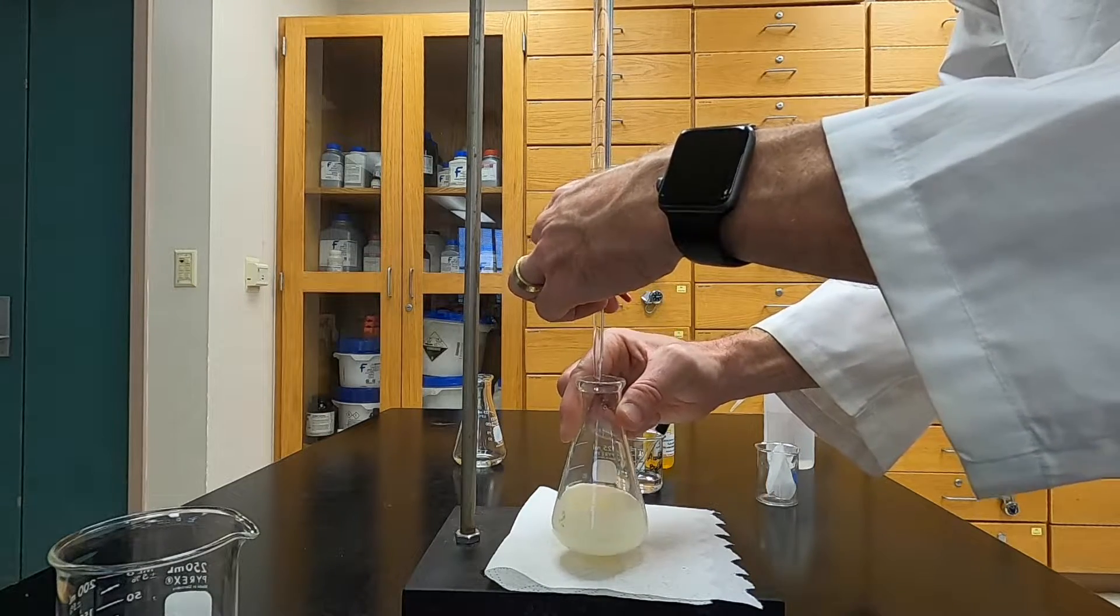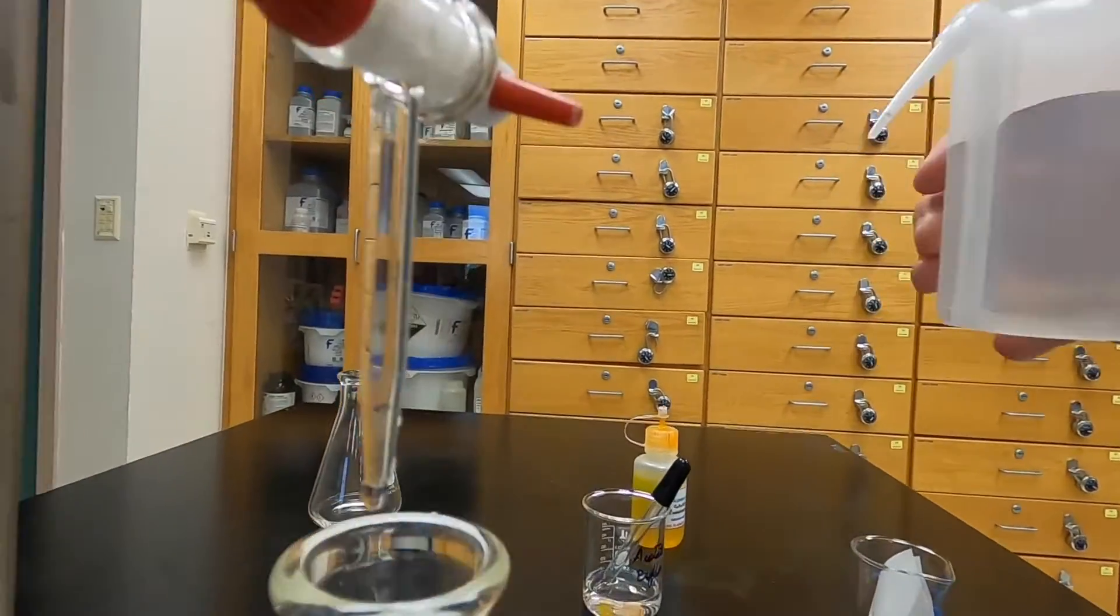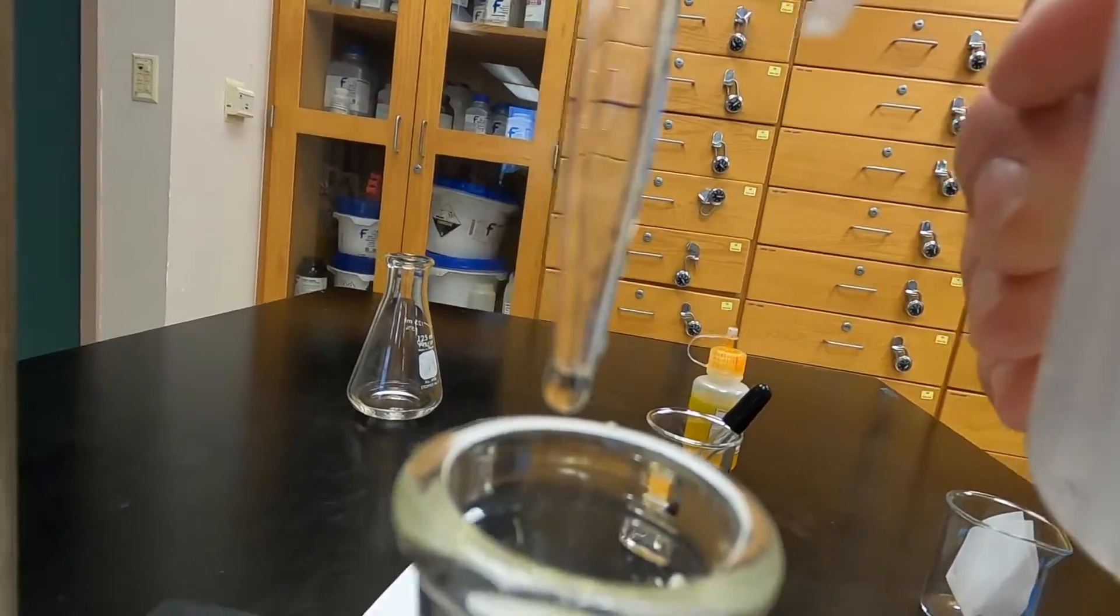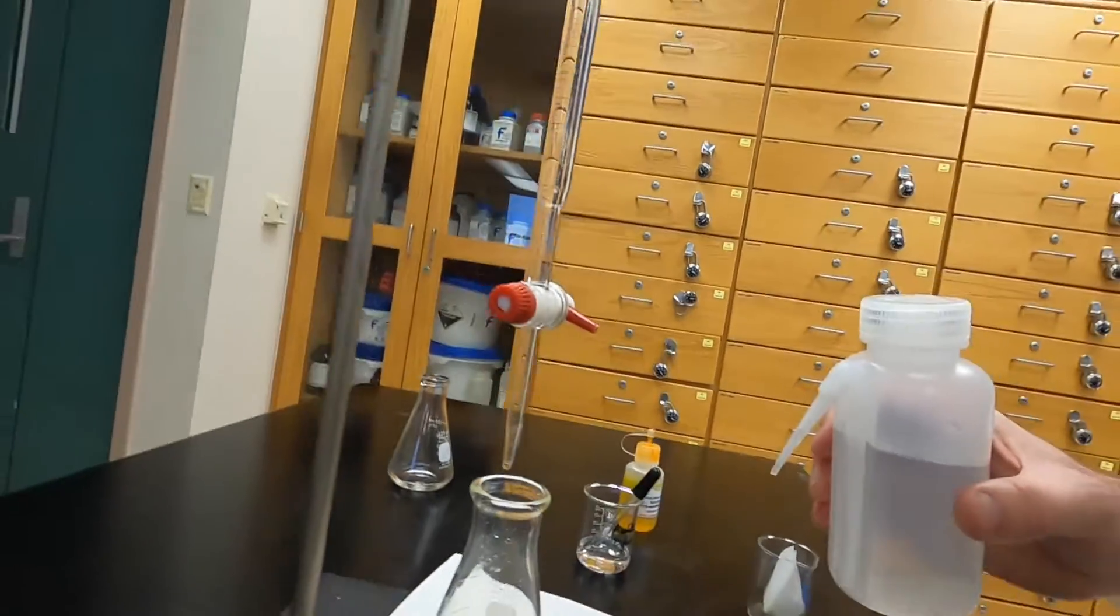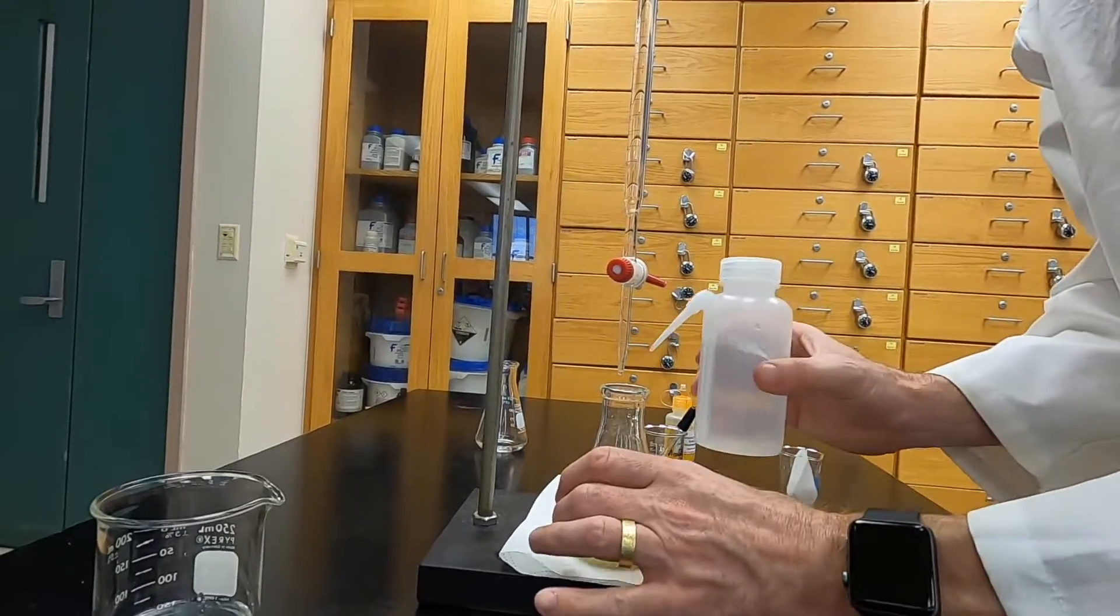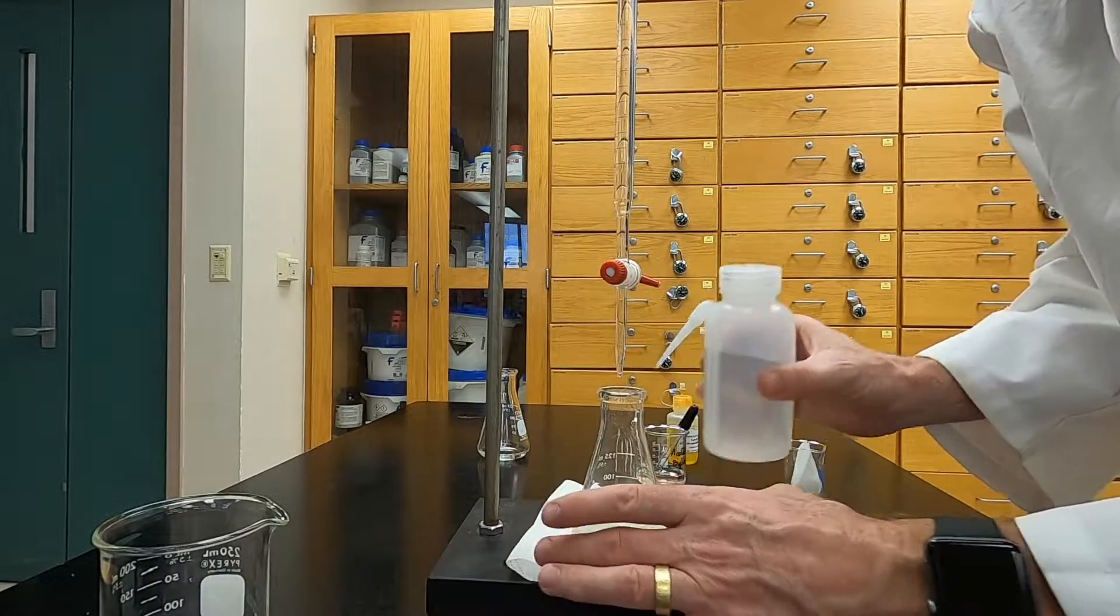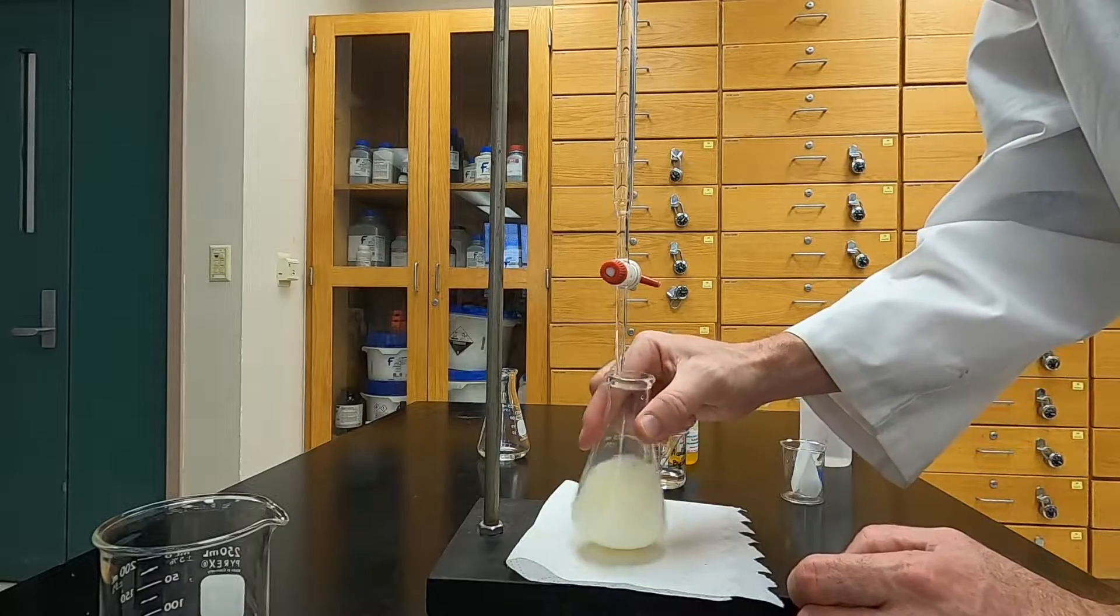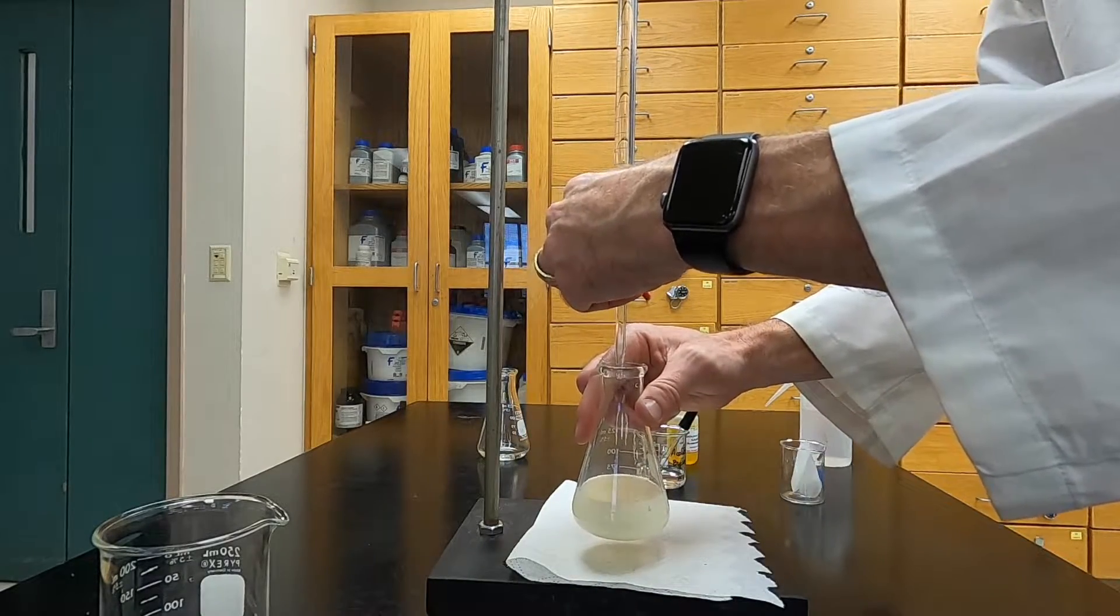One way to ensure that you're reaching your equivalence point as accurately as possible is to master the partial drop technique. Here, some of the titrant is still hanging from the tip of the burette. By using a stream of water, I can carefully spray that solution into the flask, rinse down the sides of the flask, and now I've delivered less than a drop of solution. This can be crucial in hitting the exact endpoint you're looking to reach.